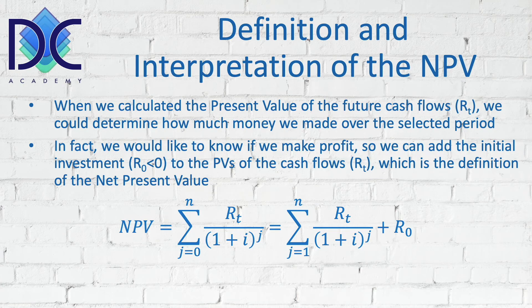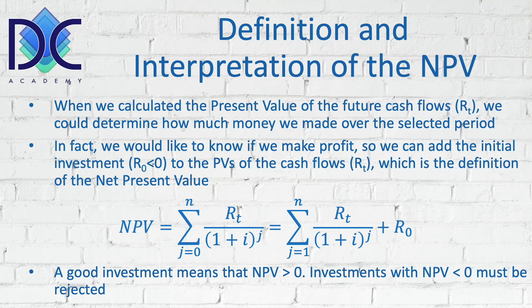The formula is the summation from period zero — the initial investment — till the end of the lifetime of the project, of the cash flows divided by the discounting factor (1 + i) to the power j, where j is the period being considered. Since R0 is separately considered at time zero, we can also write the formula as the sum of the discounted future cash flows plus R0, where R0 is a negative value.